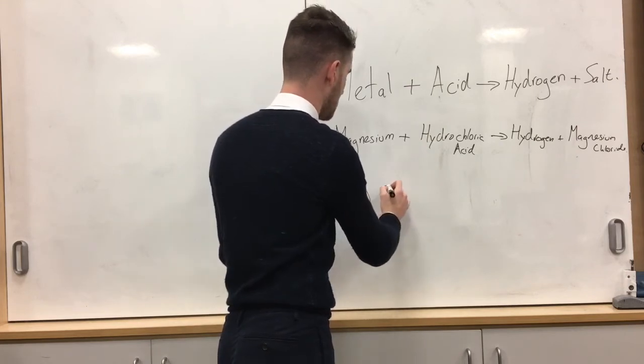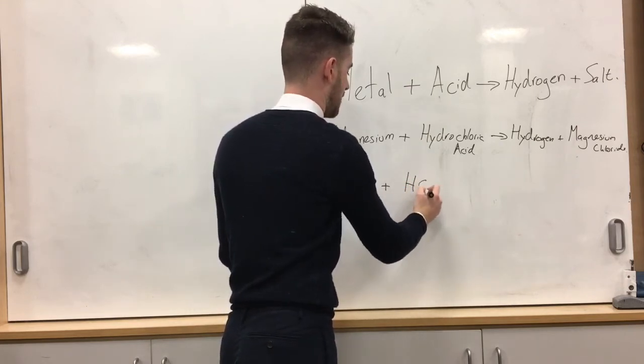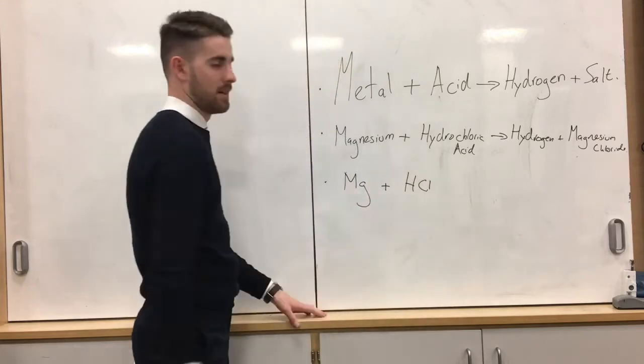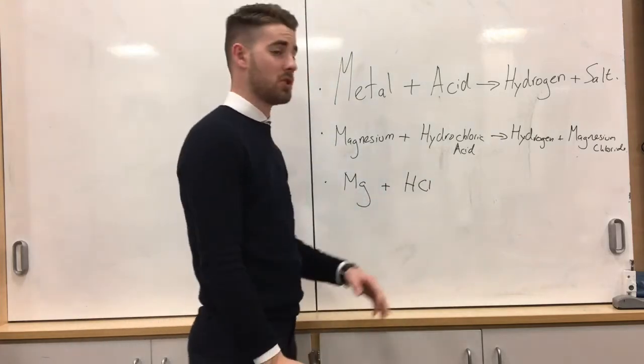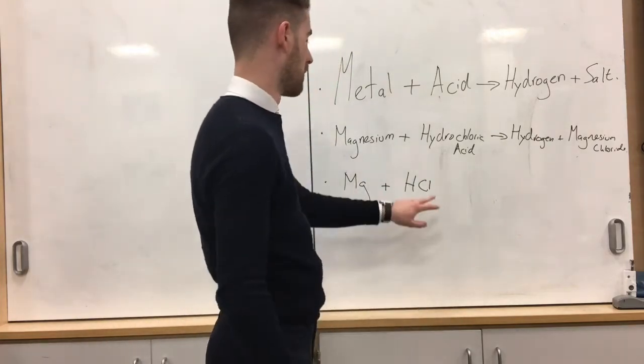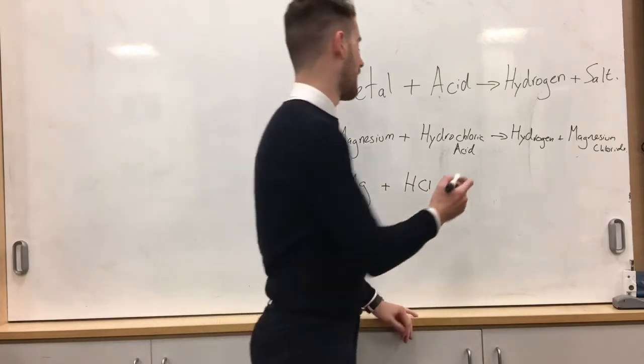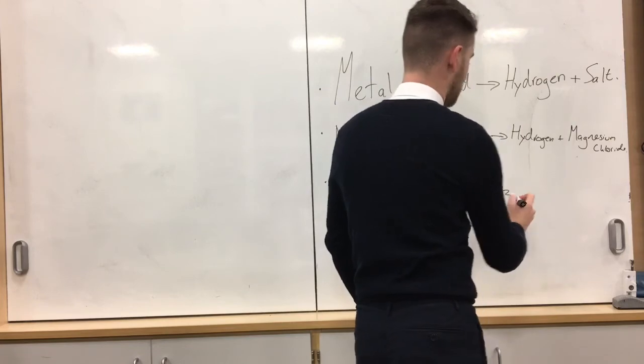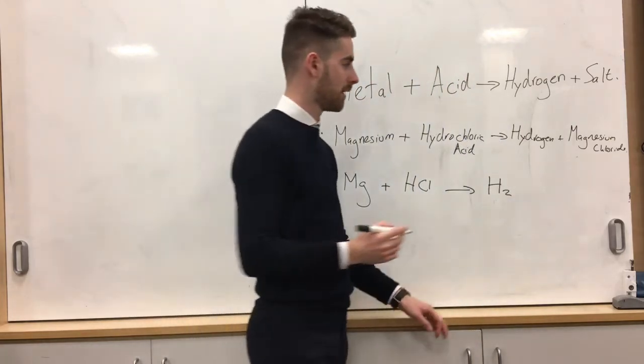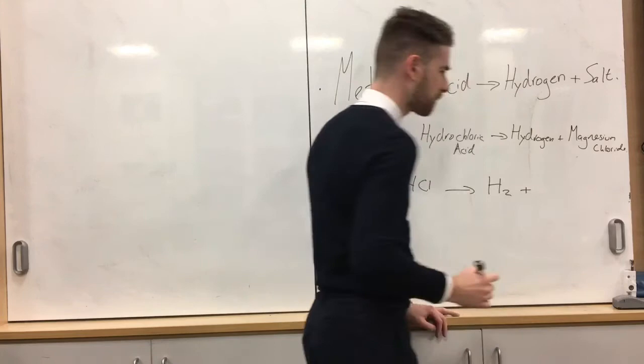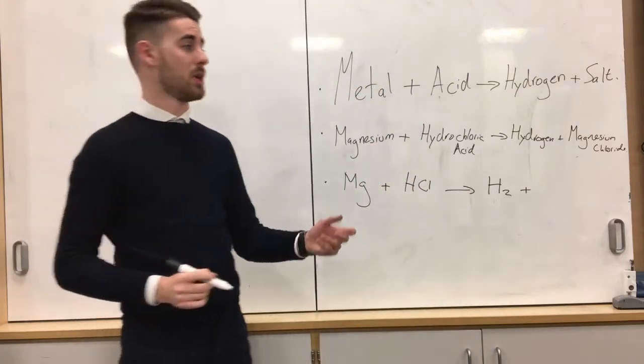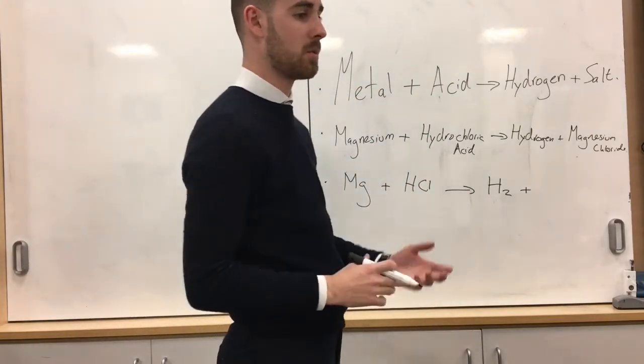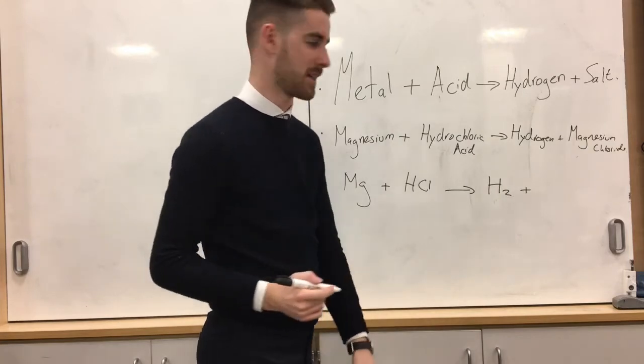So magnesium plus HCl. So you should know the chemical symbol for magnesium. Now you should definitely know the chemical formula for hydrochloric acid. You should definitely know the chemical formula for hydrogen. H2 because it's diatomic. And then the formula for the salt. You can work it out in your head. Think about the valency or you can use the SVX method.